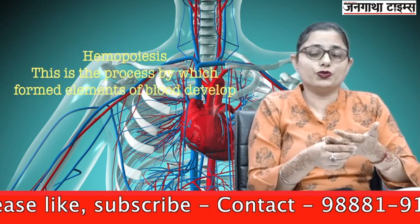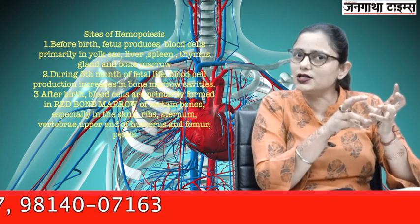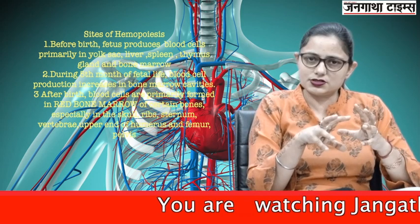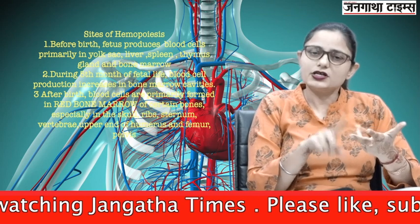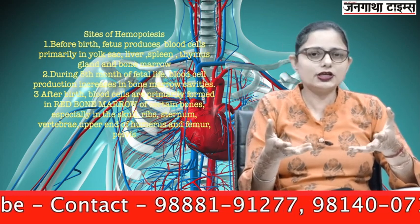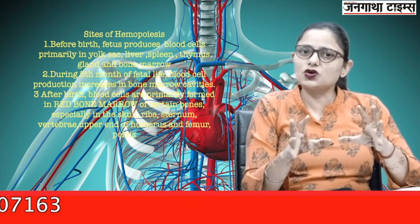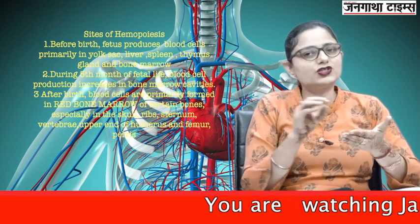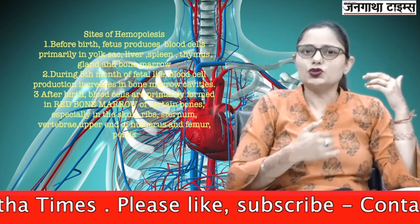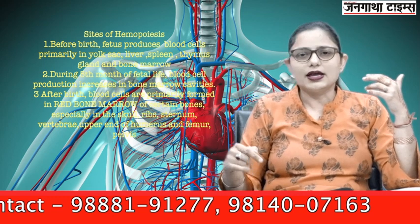Hemopoiesis — where hemo stands for blood and poiesis means synthesis — is the site of blood cell formation. In the fetus, blood cells are formed in the yolk sac, liver, spleen, and thymus gland. By the fifth month of fetal life, more synthesis shifts to the red bone marrow. After birth, the only site is the red bone marrow, present in the skull, sternum, ribs, vertebrae, humerus, femur, and pelvis bones.